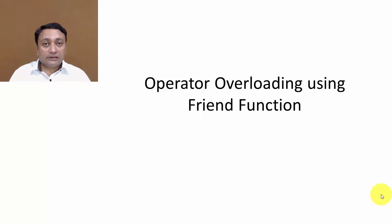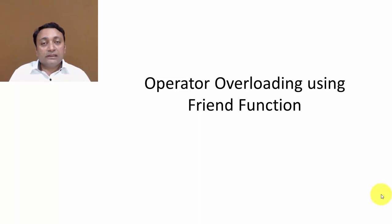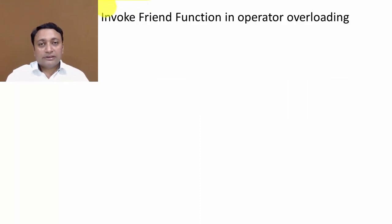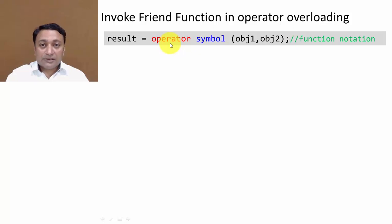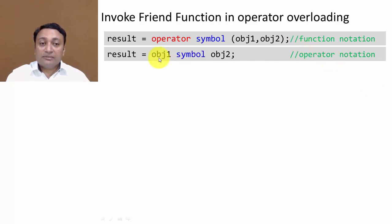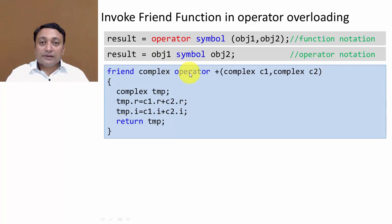Next, let us discuss operator overloading using a friend function. In operator overloading, the operator function is very similar to a member function. Just as we can convert a member function to a friend function by writing the friend keyword before the definition, we can convert an operator function to a friend function the same way. The function notation becomes: operator, then symbol, passing two objects as arguments.